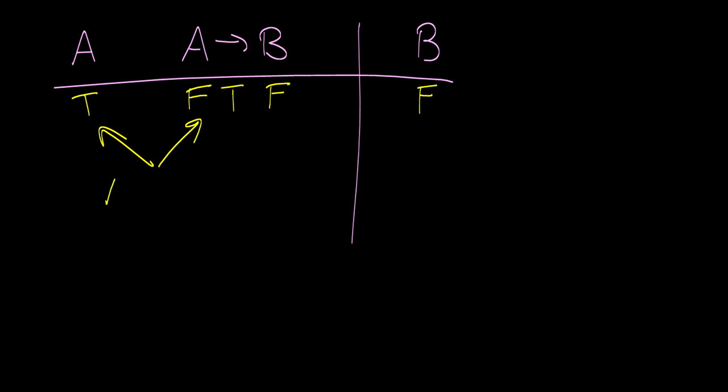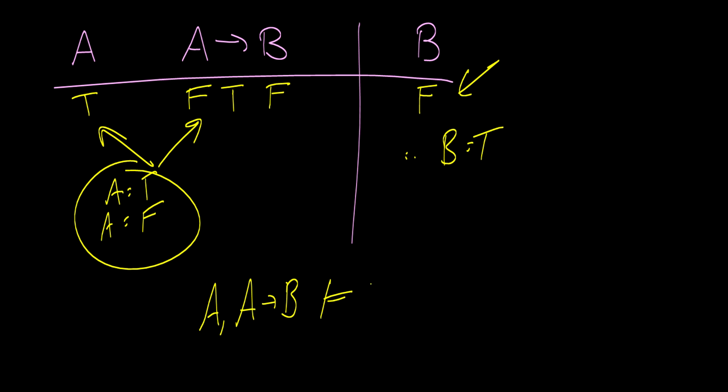because we have A is equal to true, and A is equal to false. And this is a problem. So therefore, B has to be true. We cannot make the premises true and the conclusion false. Therefore, what we can say is that A, A arrow B entails B.